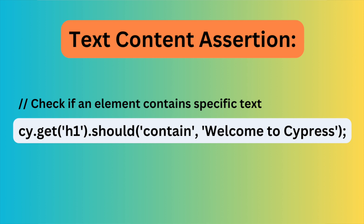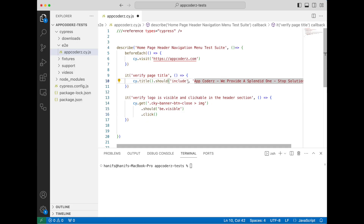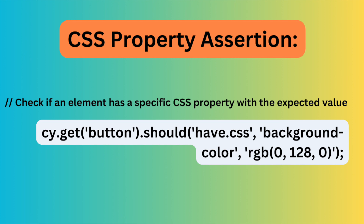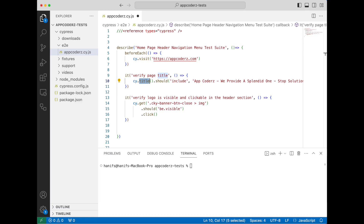We can also check a text content assertion, which checks if an element contains specific text. For example, we are looking at an `h1` tag and we want to verify the text 'Welcome to Cypress', or in our example we look for a title. We can also use an attribute value assertion, which checks if an element has a specific attribute with the expected value. There is also a CSS property assertion, which checks if an element has a specific CSS property with the expected value.